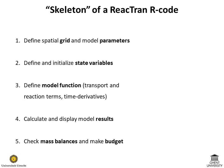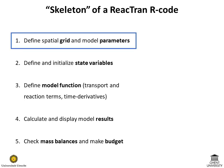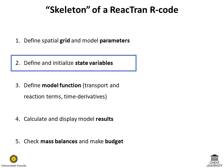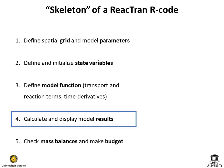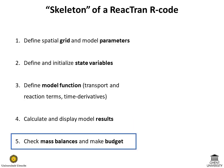The skeleton of a one-dimensional reaction transport model has the following components: definition of the spatial grid and any model parameters that may or may not vary in space; definition and initialization of state variables; definition of the model function, which includes calculation of the transport and reaction terms for each state variable and time derivatives; calculation and plotting of the solution; and finally, a check of mass balances and construction of a budget.